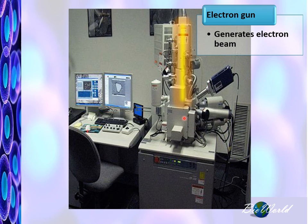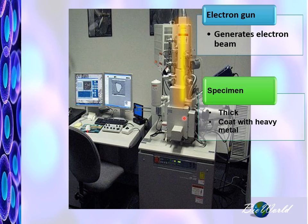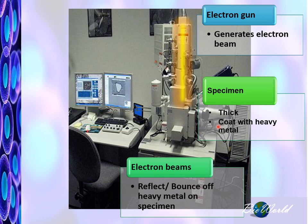Now it is here at the specimen where the preparation is different. In scanning electron microscopes, you do not need to cut the specimen. The specimen can be thick, but you still have to coat it with heavy metal. So as a consequence of this, what happens is the electrons from the electron beam cannot pass through the specimen because it is too thick. But it will reflect or bounce off the heavy metal on the specimen.